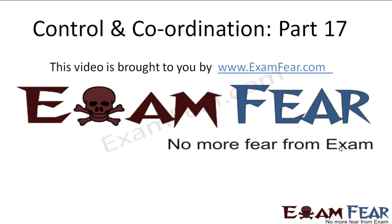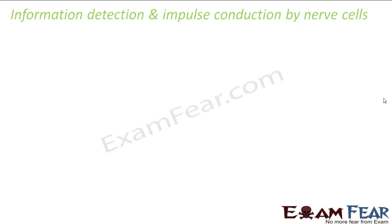Hello friends, this video on control and coordination part 17 is brought to you by examfear.com. Let us now talk about information detection and impulse conduction by nerve cells — how nerve cells actually detect some external information. Now that we have already understood the structure of a neuron, let us have a look at it in detail.